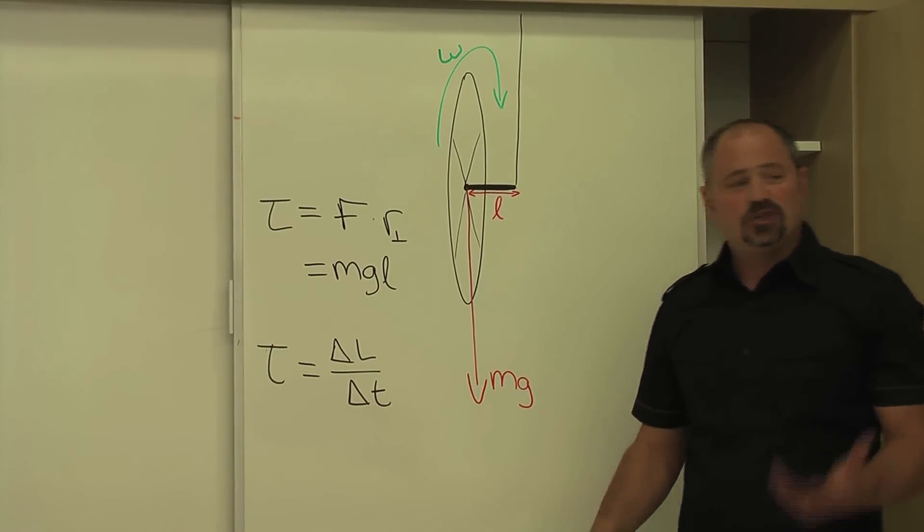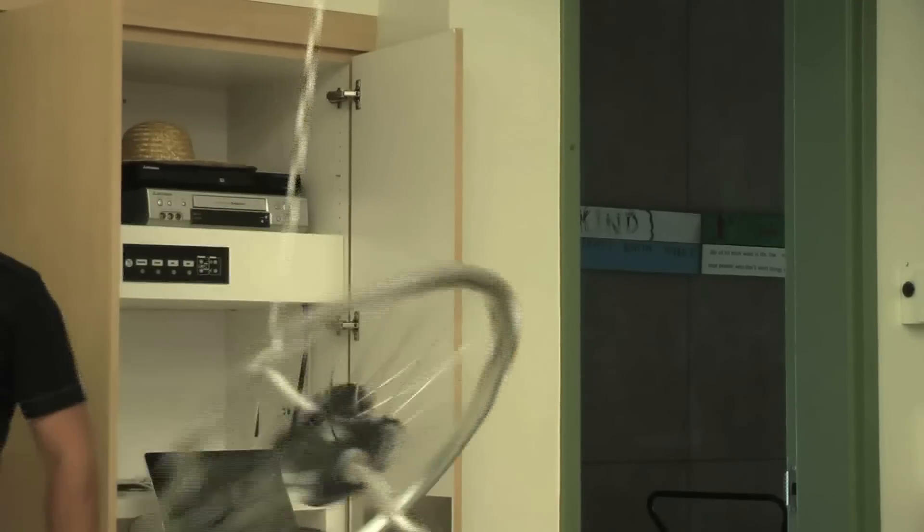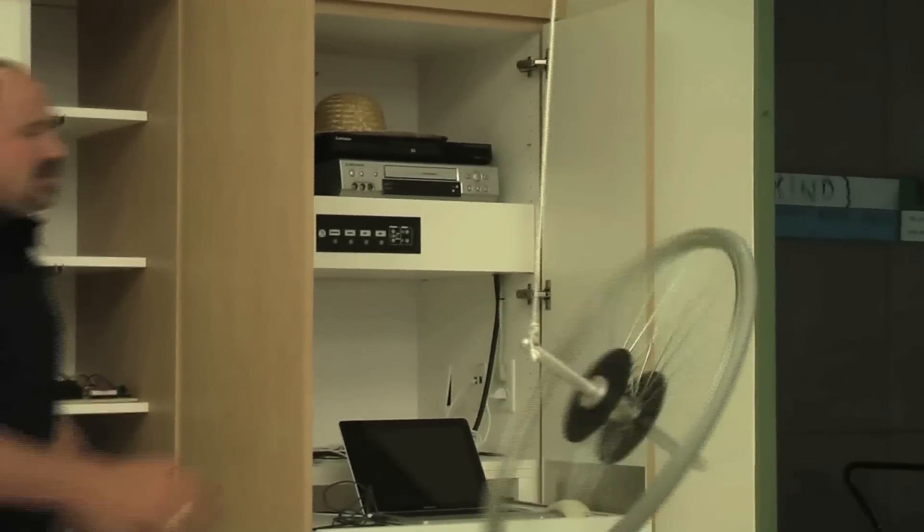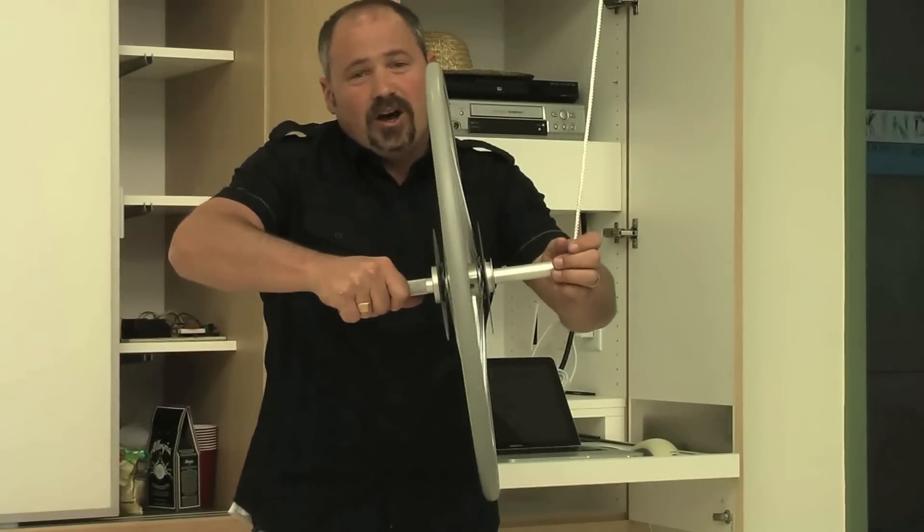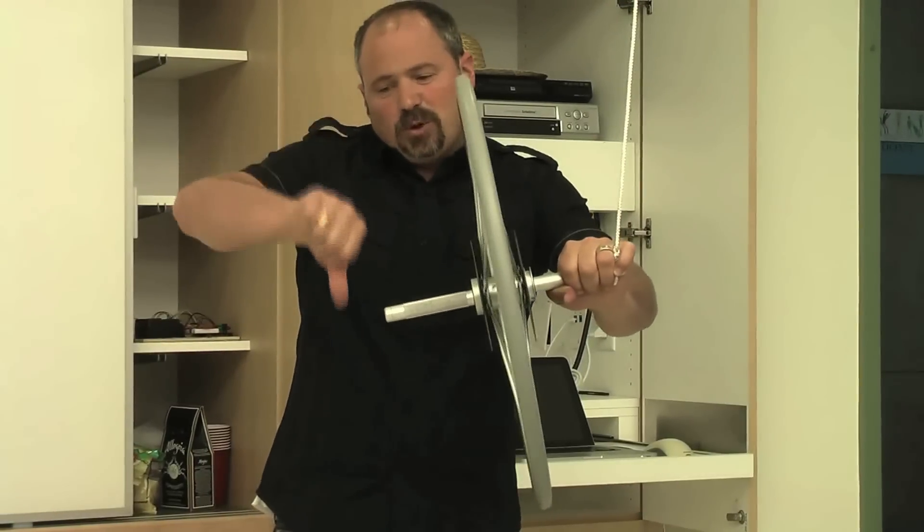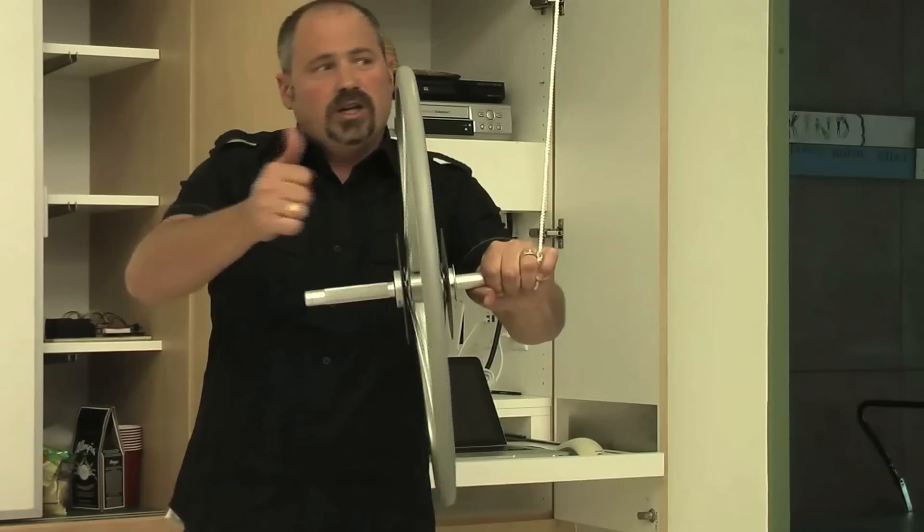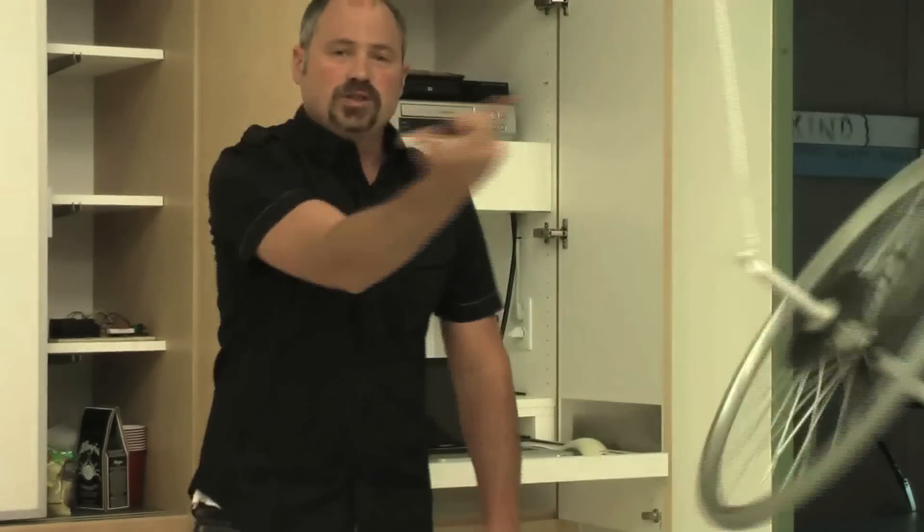...angular momentum is being transferred from the wheel to the rope. So just like before with the bicycle wheel in the platform, as this guy starts to go downward, it causes a change in momentum downward. Therefore, in order to conserve momentum, you need an equal change in momentum upward for this guy, and therefore it starts spinning like this.